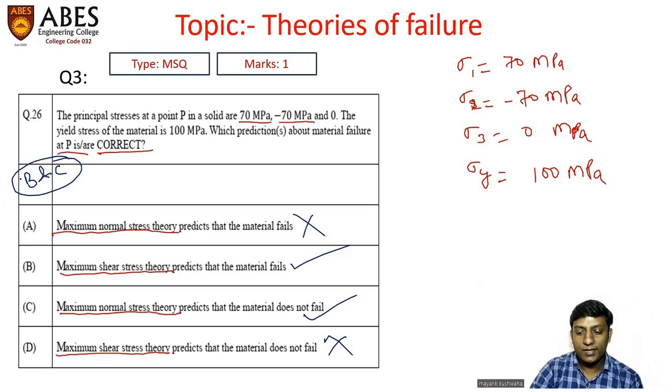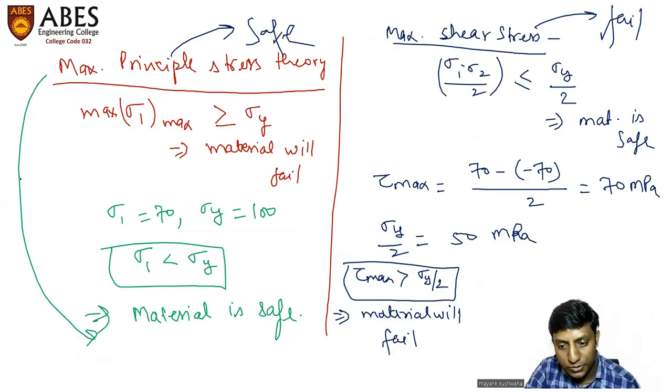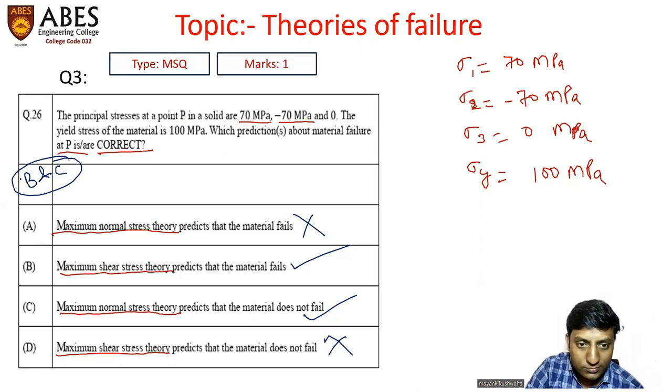So our options would be B and C. I hope you would have got the solution. So these were some of the questions which I have discussed in this video. There were total nine questions that were asked in GATE 2023. I shall be discussing the solution of the remaining also but in part two. Thank you for watching.